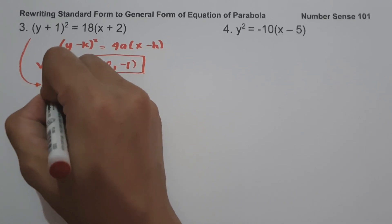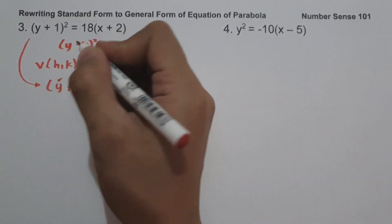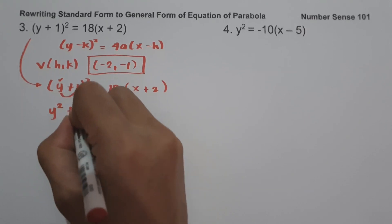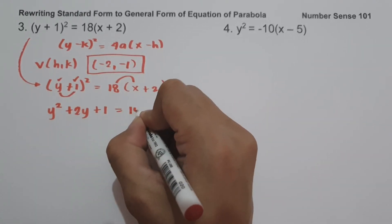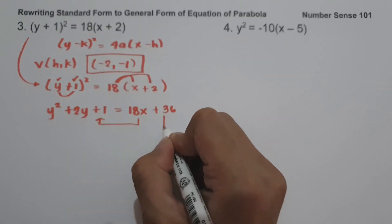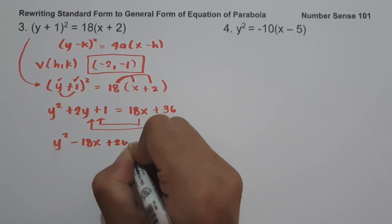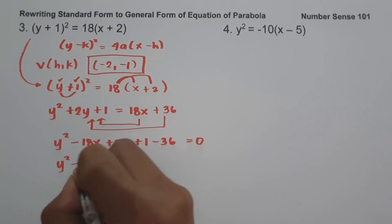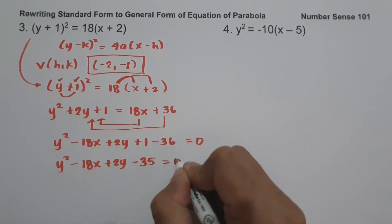To convert to general form, we rewrite (y + 1)² = 18(x + 2). Expanding: y times y is y², y times 1 times 2 is 2y, and 1 times itself is positive 1. Then 18 times x is 18x, and 18 times 2 is 36. Moving 18x and 36 to the other side: y² − 18x + 2y + 1 − 36 = 0, which simplifies to y² − 18x + 2y − 35 = 0. And this will be our answer.